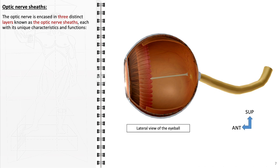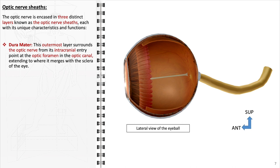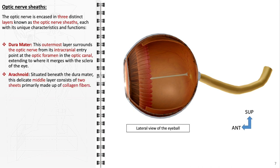The optic nerve sheaths are the protective coverings surrounding the optic nerve, continuous with the meninges of the brain, and consist of three distinct layers. The outermost layer, the dura mater, is the toughest and most durable, enveloping the optic nerve from the optic foramen extending to where it fuses with the sclera of the eye, providing significant mechanical protection. Positioned as the middle layer, the arachnoid mater is a thin, transparent sheath primarily composed of two sheets of collagen and elastic fibers, providing a cushioning effect that safeguards the optic nerve from mechanical shocks and vibrations.